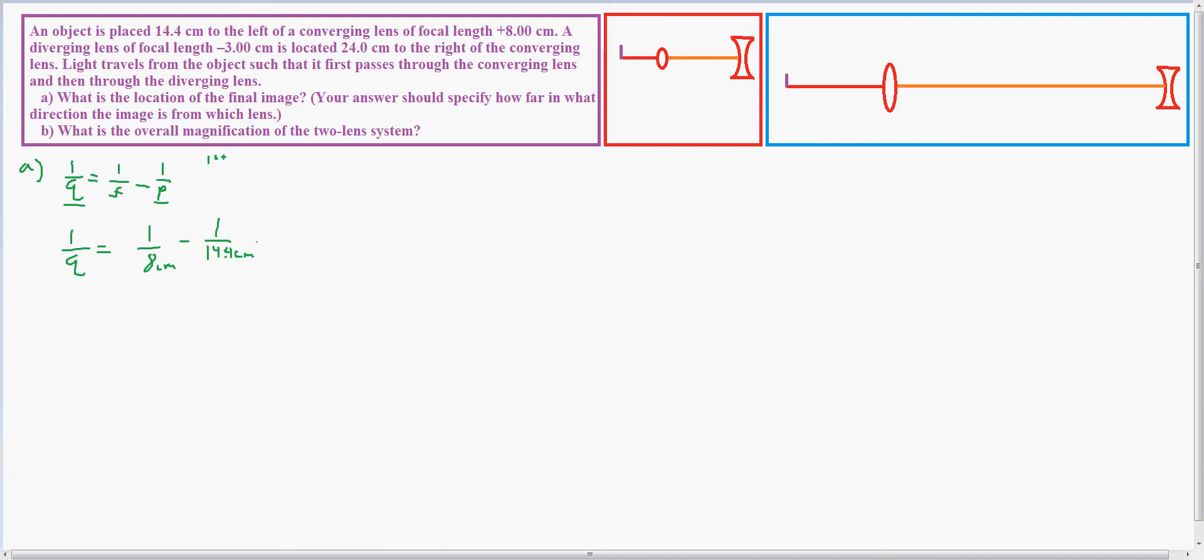And to save time, I'm going to allow you to do those calculations. I got 1 over Q equals negative 6.4 over 115.2 cm. Which, after an inversion, we get Q to be equal to negative 18 centimeters.